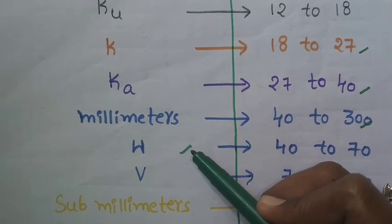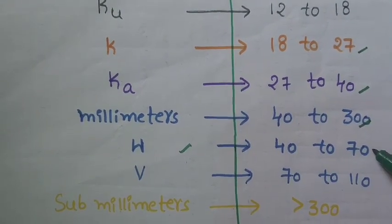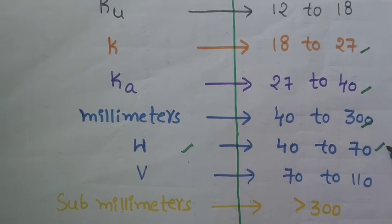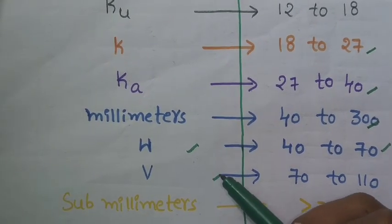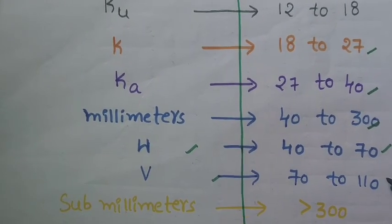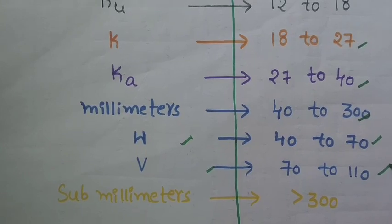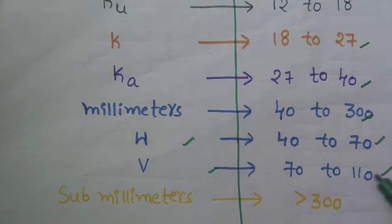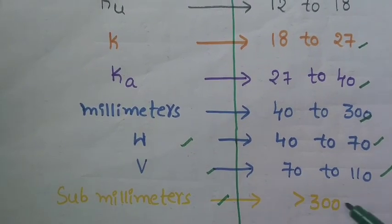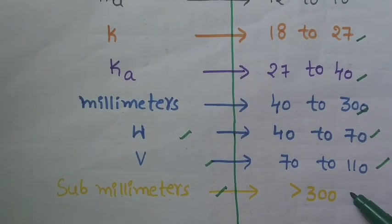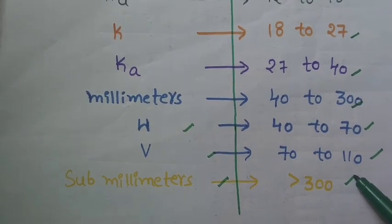For the W band, the frequency range is about 40 to 70 gigahertz. For the V band, the frequency range is about 70 to 110 gigahertz. For the submillimeter band, the frequency range is greater than 300 gigahertz.